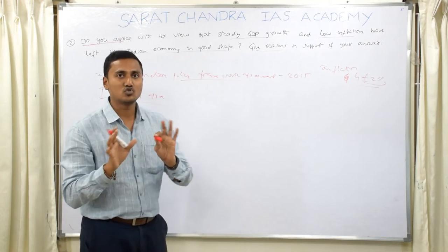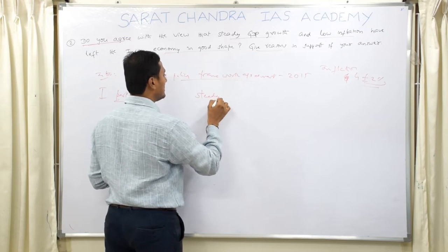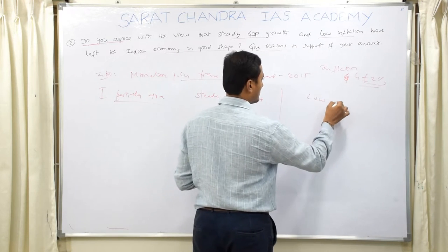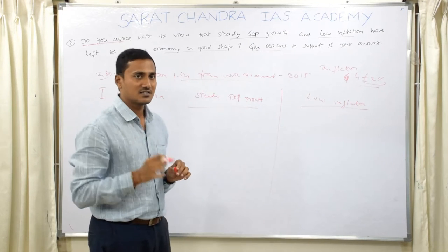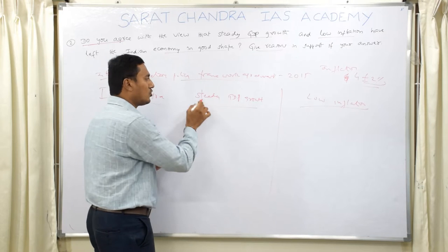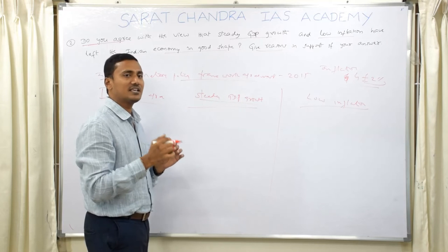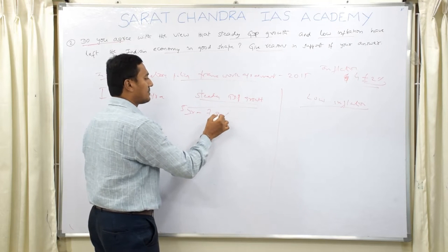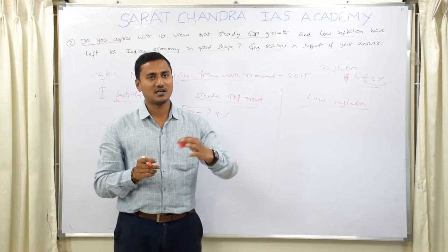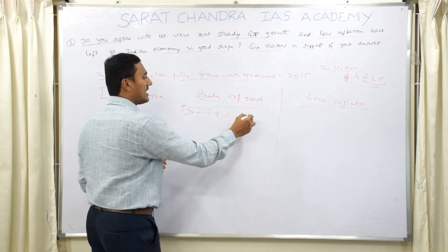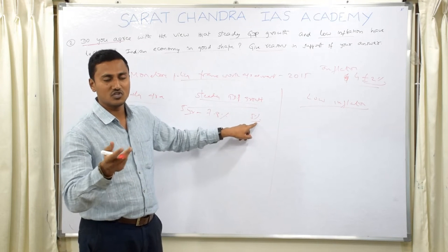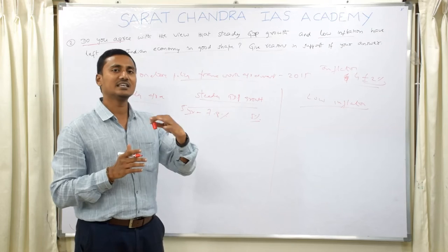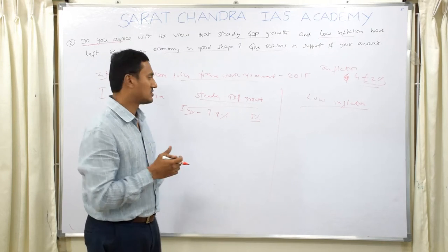The answer is divided into two parts: steady GDP growth and low inflation. First, prove whether there is steady GDP growth in India. You can say that in the last 5 years, the average GDP growth of India is around 7.8%. However, caution that in the first quarter of the current financial year, GDP growth actually fell — what we are seeing as an economic slowdown. But in the larger picture over the last 5 years, GDP growth is steady, increasing at an average of 7.8%, so this statement is proved.